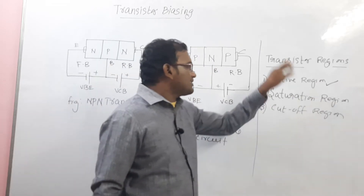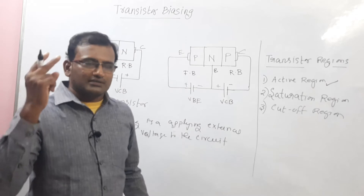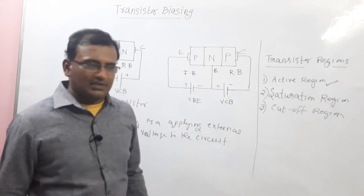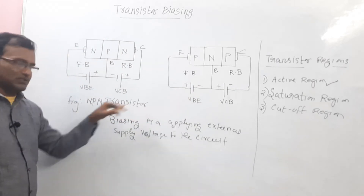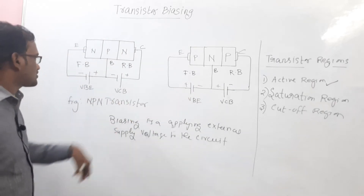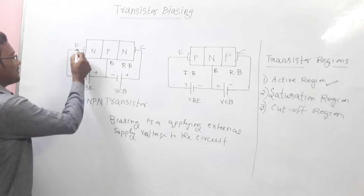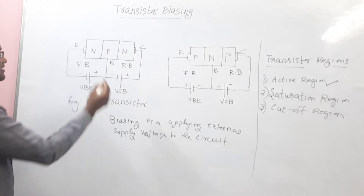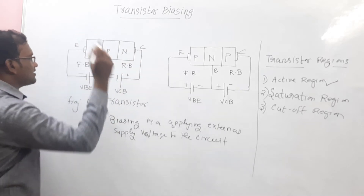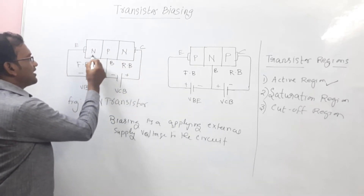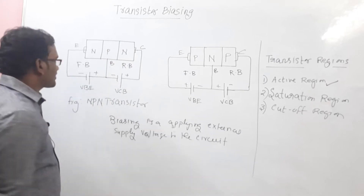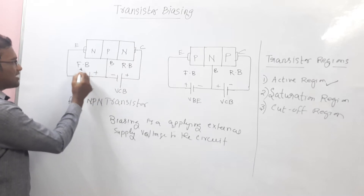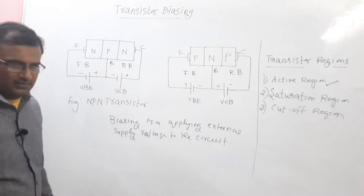So what is active region? It consists of two supply voltages. One is forward bias and the other one is reverse bias. In this circuit, let us take an NPN transistor. In this NPN transistor, here is the emitter, base, and collector. This is the N region of the NPN. Between emitter and base junction, which is connected as a supply voltage, that is forward bias.